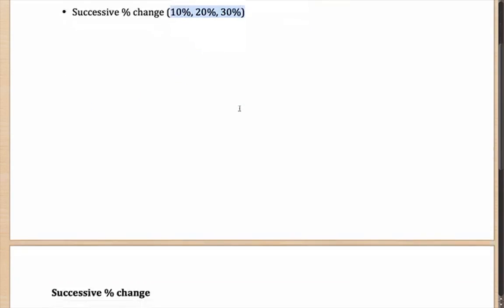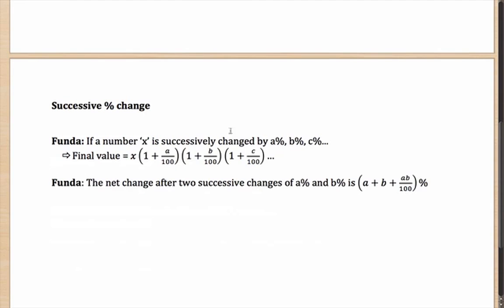Here is how you can solve these questions. Let's say, if you have an A percent change and a B percent change and then a C percent change, it is effectively given by X being your original value into 1 plus A by 100, 1 plus B by 100 and 1 plus C by 100.